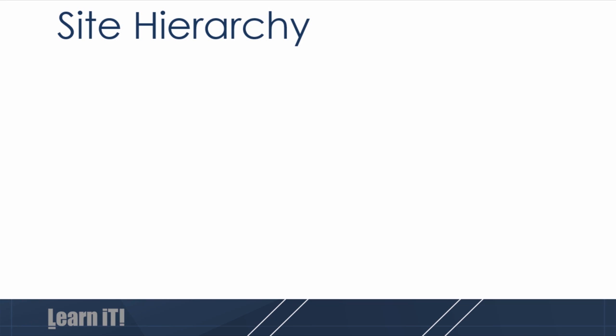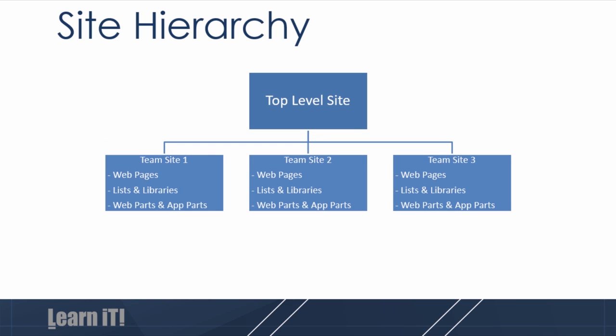Now that we've talked about those core components of SharePoint, let's talk about where they plug into the broad site hierarchy. At the top of every SharePoint site, you have what's referred to as a top-level site — it's the highest site in an entire site collection environment. A top-level site contains all the components of a SharePoint site, including pages, lists, libraries, web parts, and app parts. It's important to note that top-level sites also have their own collection of permissions. A top-level site can easily have a variety of children or sub-sites.